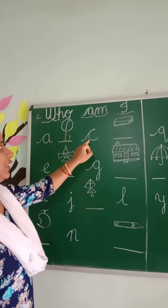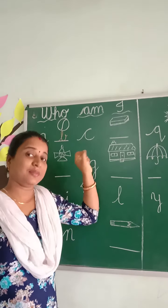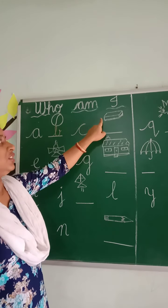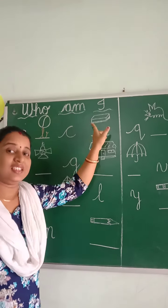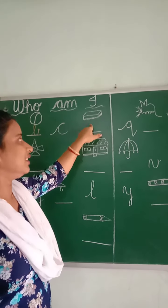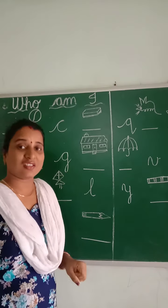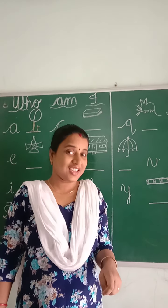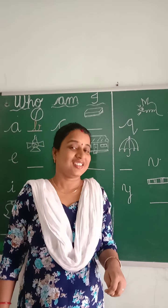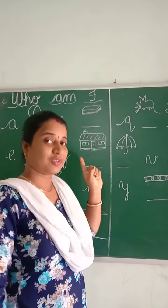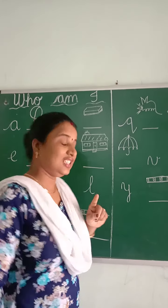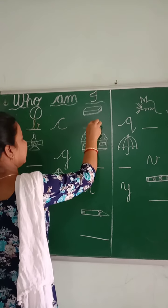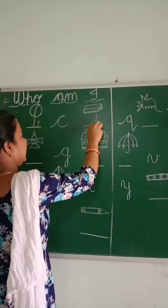B is followed by small cursive C. Then after C, which picture is this? It is a duster. D — duster's first letter is D. Small cursive D.